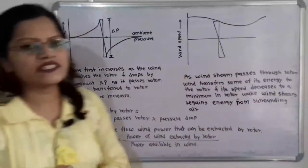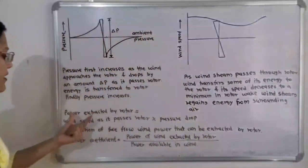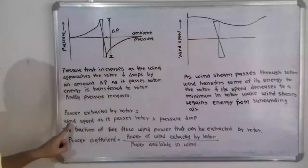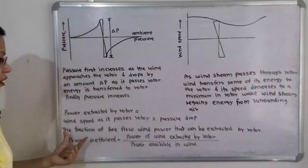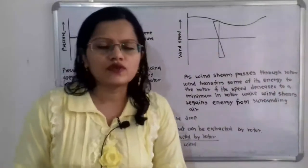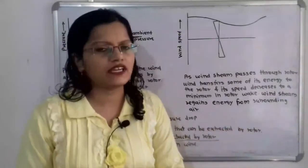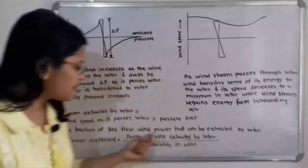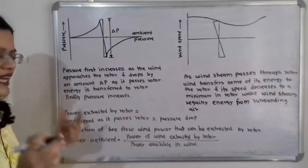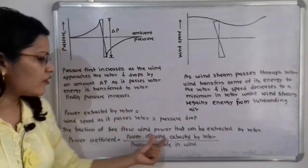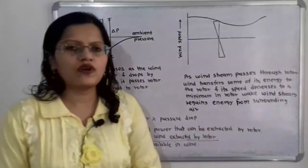The power extracted by the rotor equals wind speed as it passes through the rotor multiplied by the pressure drop delta p (Δp). The power coefficient is defined as the fraction of free-flow wind power that can be extracted by the rotor. Therefore, the power coefficient equals power extracted by the rotor divided by the power available in the wind.